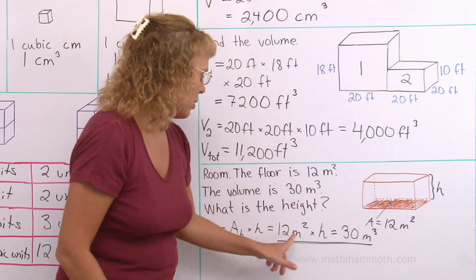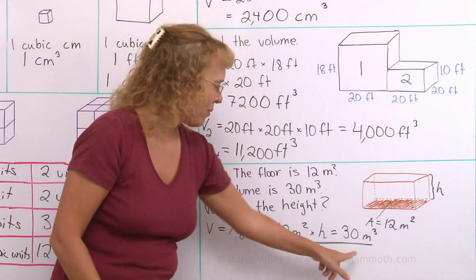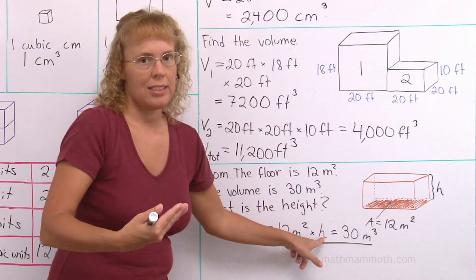Now I can think that, okay, 12 times 2 is not enough. It's 24. 12 times 3 would be 36. That's too much.